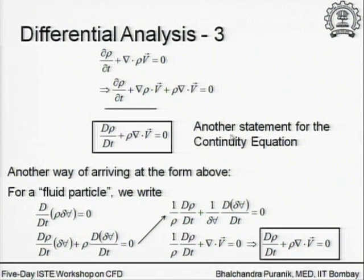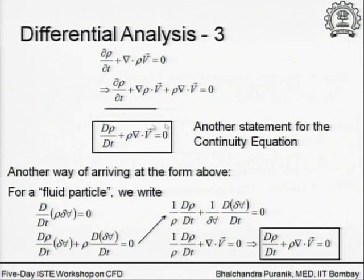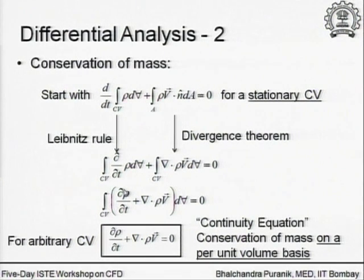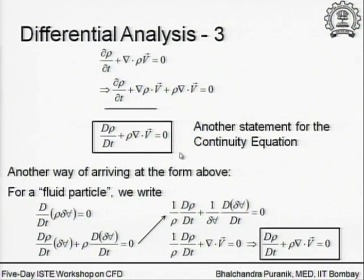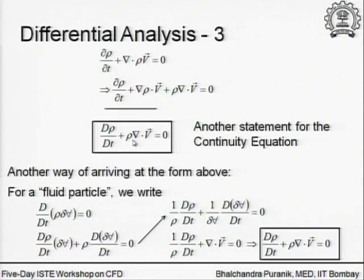There is something perhaps many of you will know. If you write it in the first form as we obtained initially versus this second form — the first is called the conservative statement or conservation form of the continuity equation. This is something the CFD community uses a lot. The second is a non-conservation form. I am not going to get into the full discussion of that, but keep in mind that one is the conservative and the other is the so-called non-conservative form.